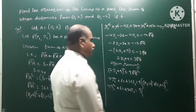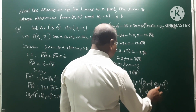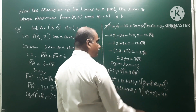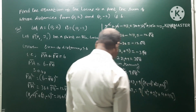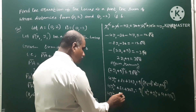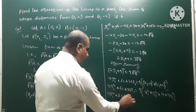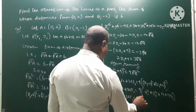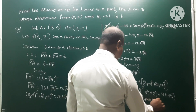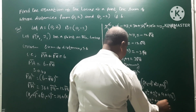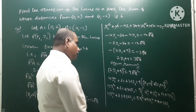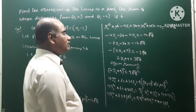Expanding 9 times PB squared gives 9x1 squared plus 9(y1 plus 2) squared, which equals 9x1 squared plus 9y1 squared plus 36 plus 36y1. The 36y1 terms on both sides cancel. So we have 4y1 squared plus 81 plus 36y1 equals 9x1 squared plus 9y1 squared plus 36 plus 36y1.